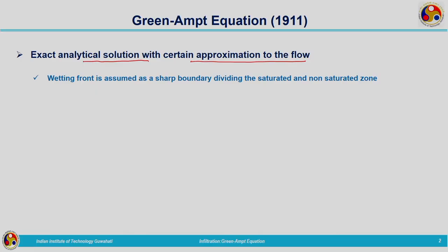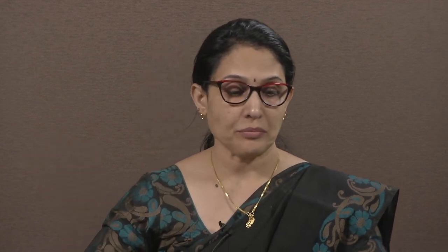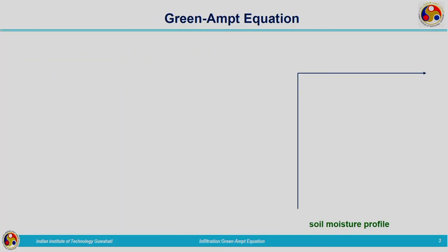In this formulation, the wetting front is assumed as a sharp boundary dividing the saturated and unsaturated zones. While we discussed the soil moisture profile earlier with four zones, here we are considering only two zones: the saturated zone and the unsaturated zone. Other zones such as the transmission zone and transition zone are not taken into account. Before starting the derivation, we need to have an idea about the different parameters considered.